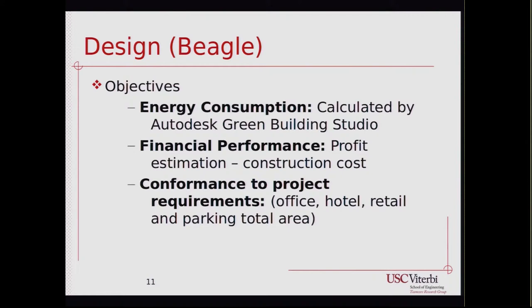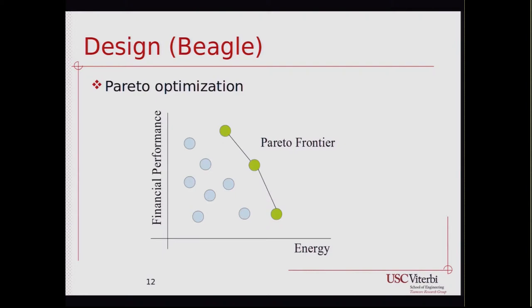The Beagle system optimizes according to three factors: the energy consumption of the building, calculated using Autodesk Green Building Studio; the financial performance of the building, accounting for construction cost; and the conformance to project requirements — for example, how much area is allocated to hotel, parking, and retail. This is a Pareto optimization approach, so there is a set of solutions on the Pareto frontier where it's not clear which is better than another — moving from one to another, you lose in one factor and gain in another. Other solutions are dominated by the Pareto frontier and are worse considering all three factors simultaneously.